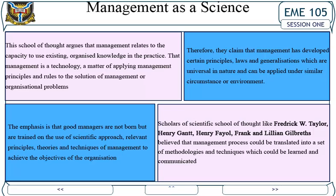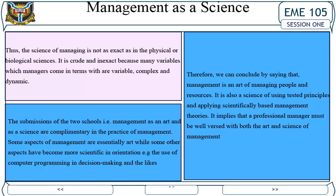Scholars of the scientific school of thought — including Frederick W. Taylor, Henry Gantt, Henry Fayol, and Frank and Lillian Gilbreth — believed that the management process could be translated into a set of methodologies and techniques which could be learned and communicated. Thus, the science of managing is not as exact as in the physical or biological sciences; it is crude and inexact because many variables managers deal with are variable, complex, and dynamic.